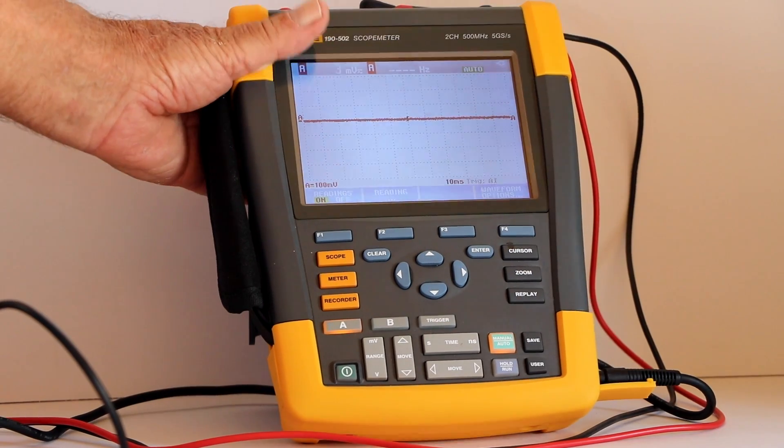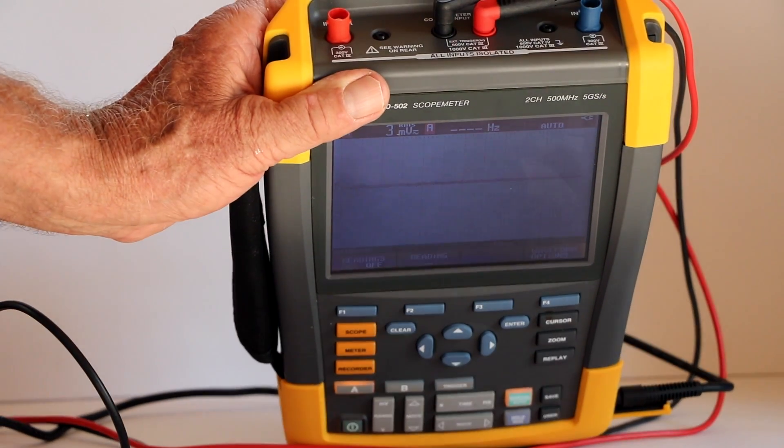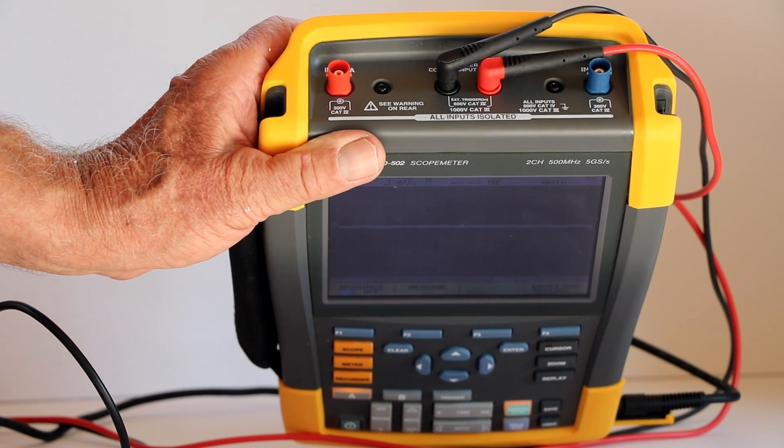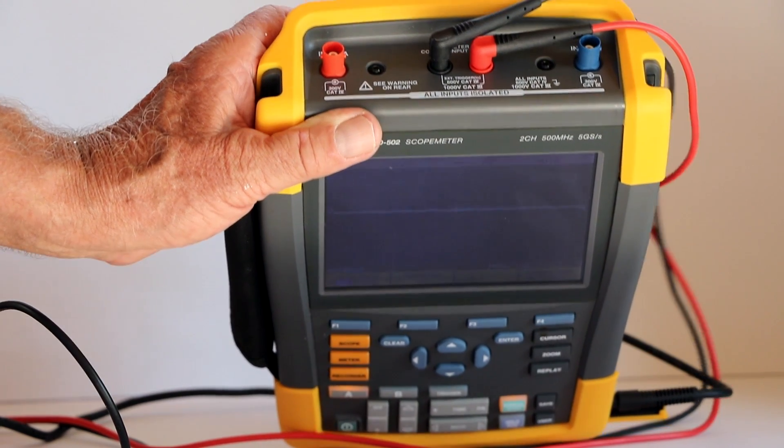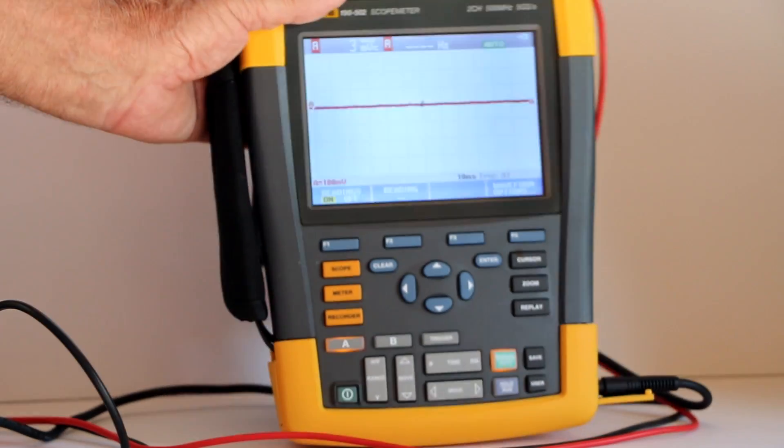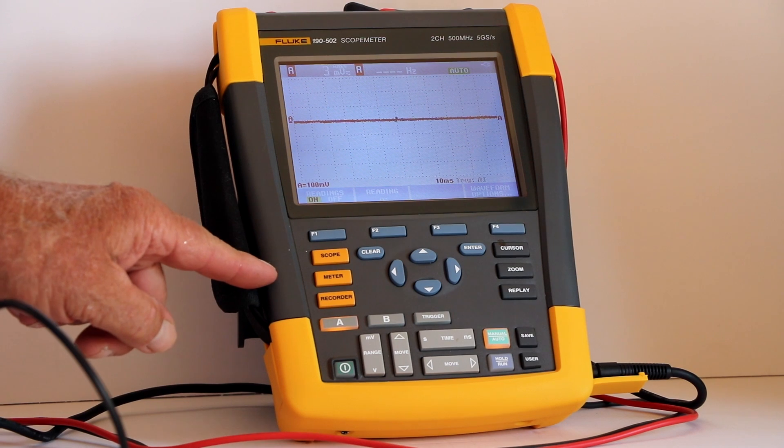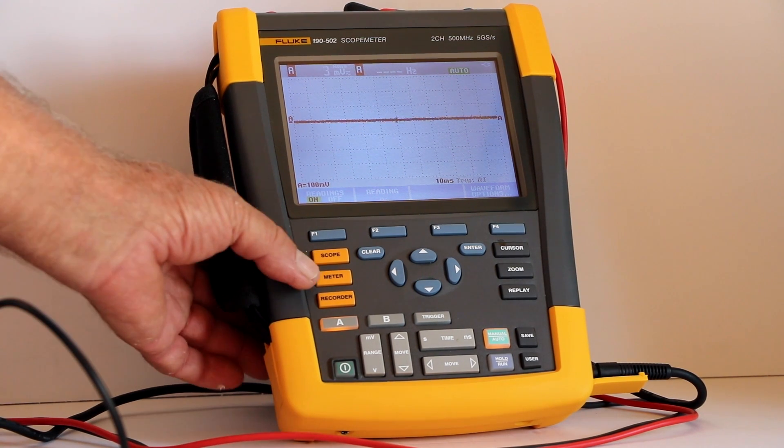On the top panel, this two-channel instrument has two oscilloscope analog channel inputs, one at either side, and between them a pair of banana jacks that will accept ordinary multimeter probes. To choose between modes, simply press Scope or Meter. To illustrate, we'll press Meter and take some measurements.